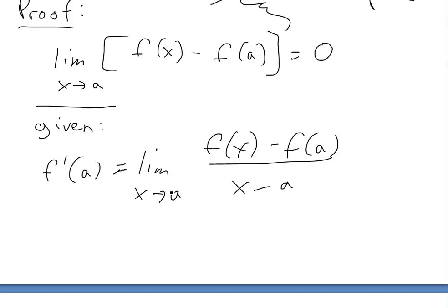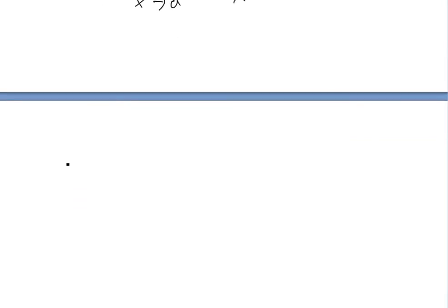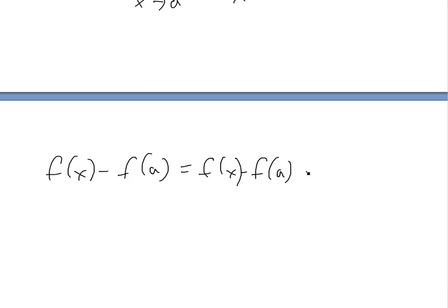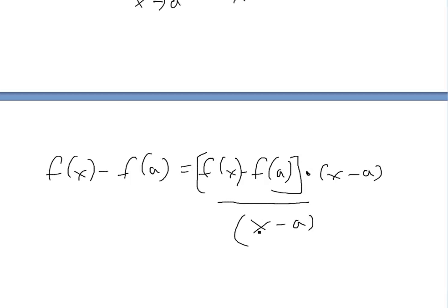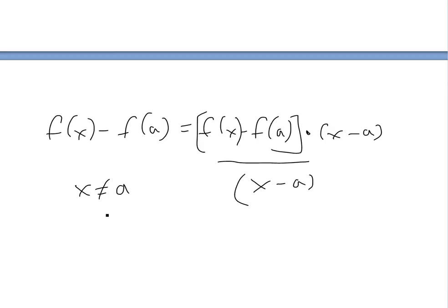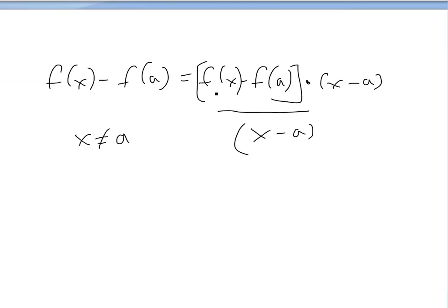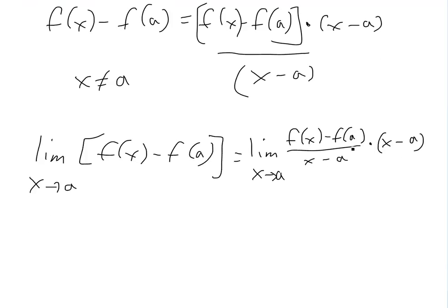Now, going back to f(x) minus f(a), we can multiply and divide by (x minus a) without changing anything, writing it as [f(x) minus f(a)] divided by [x minus a], times [x minus a]. We can divide by (x minus a) because in limits, x is always approaching a but never actually equals a, so x minus a is never zero.